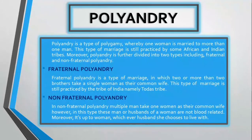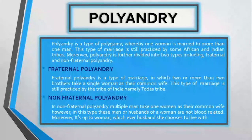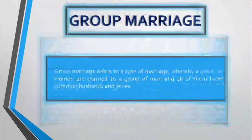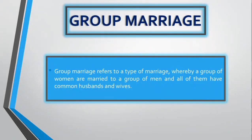In non-fraternal polyandry, multiple men take one woman as their common wife; however, these husbands are not blood related. Moreover, it is up to the woman whichever husband she chooses to live with. Group marriage refers to a type of marriage whereby a group of women are married to a group of men, and all of them have common husbands and wives.